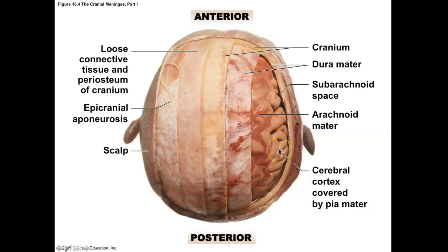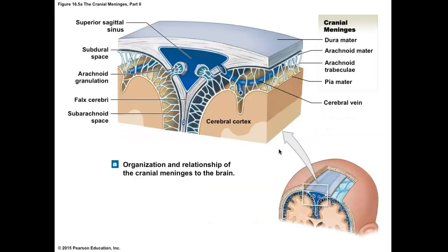The pia mater is so thin and delicate you can't see it. The dura mater — which literally translates to 'tough mother' — is a double-layered membrane. In areas where the two layers come apart, it is known as a sinus. Sinuses act like large veins, draining blood from the brain back down to the heart.